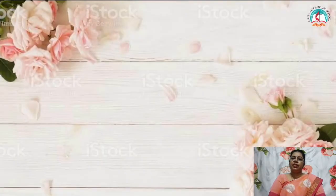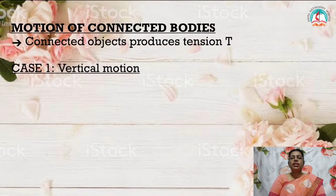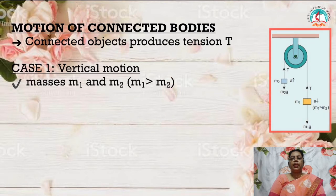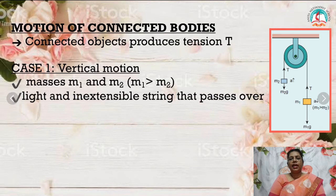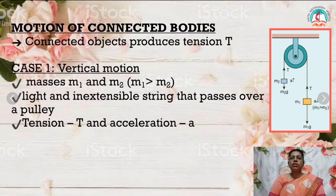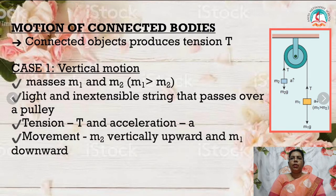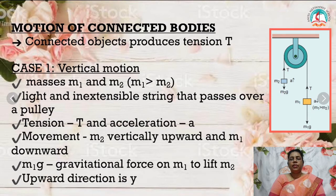Now let us see the third application: the motion of connected bodies. When objects are connected by strings and a force is applied either vertically or horizontally, it produces tension in the string and also affects the acceleration. In the first case — vertical motion — consider two blocks of masses M1 and M2 connected by a string, where M1 is slightly greater than M2. Let the tension be T and the acceleration be A. When the system is released, M2 moves vertically upwards and M1 moves vertically downwards. The upward direction is the Y direction. The free body diagram is shown for both masses M1 and M2.